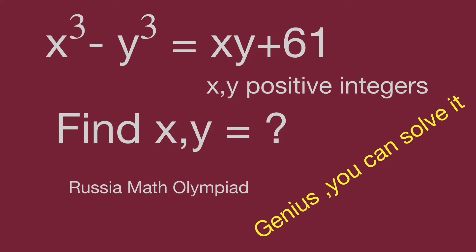Hello, you are watching Balahibo Math Genius Riddles. The questions come from Russia's Math Olympiad test. We have our question: x cubed minus y cubed equals x times y plus 61, where x and y are positive integers. Find the value of x and y.